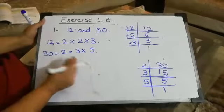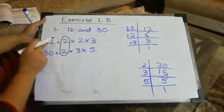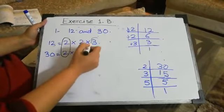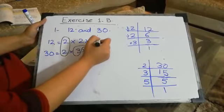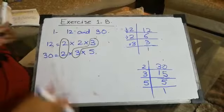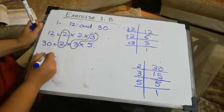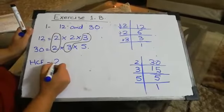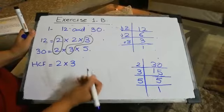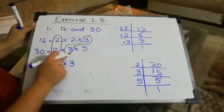Now we will find the common factors. We have 2 common in both 12 and 30. Do we have any other number in common? Yes, we have 3 in both numbers. So 2 and 3 are the two common factors. For the HCF, we are going to write the common factors, which are 2 and 3.